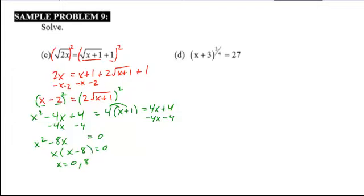We want to check these back into the original equation. If we plug in 0, the square root of 0, we want to see is that equal to the square root of 0 plus 1, plus 1. That one is extraneous, does not work.